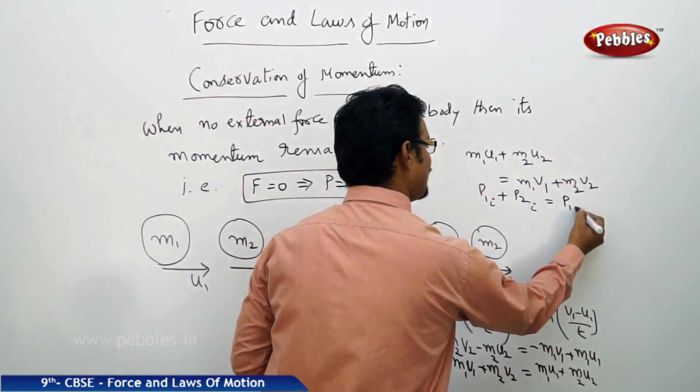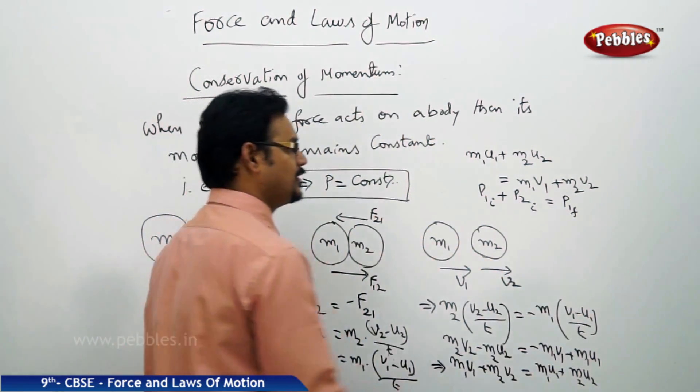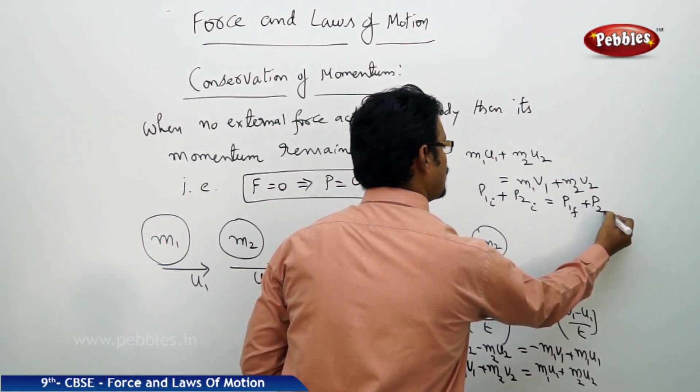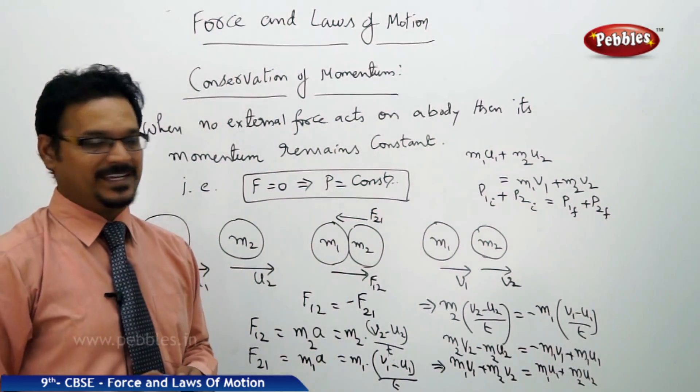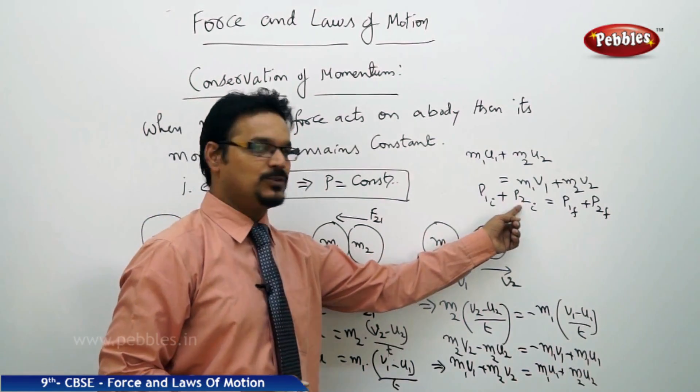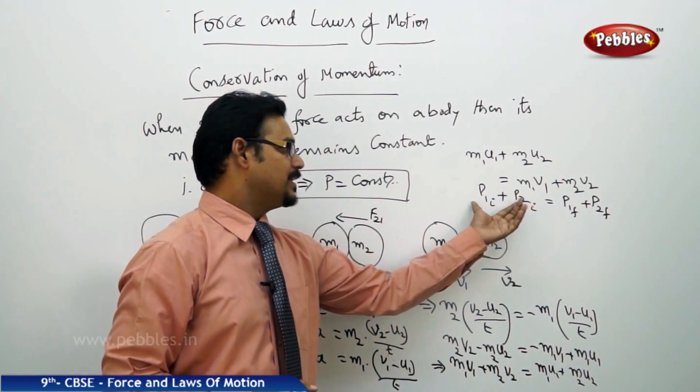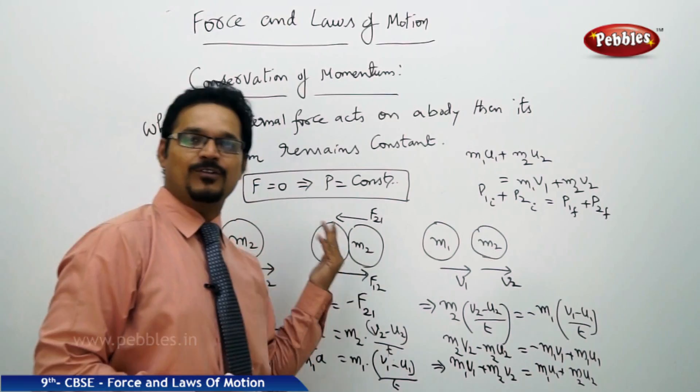So what we understood with this: P1 plus P2i, this is the total momentum before collision. This is the total momentum after collision.